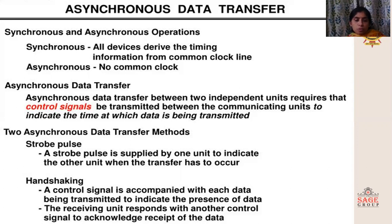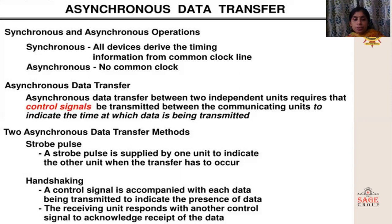Strobe pulse is one extra signal in addition to the original data. The strobe pulse is supplied by one unit. Under strobe pulse, we will discuss source-initiated strobe and destination-initiated strobe. The strobe pulse is supplied by one unit to indicate to the other unit when the actual transfer of data has to occur.